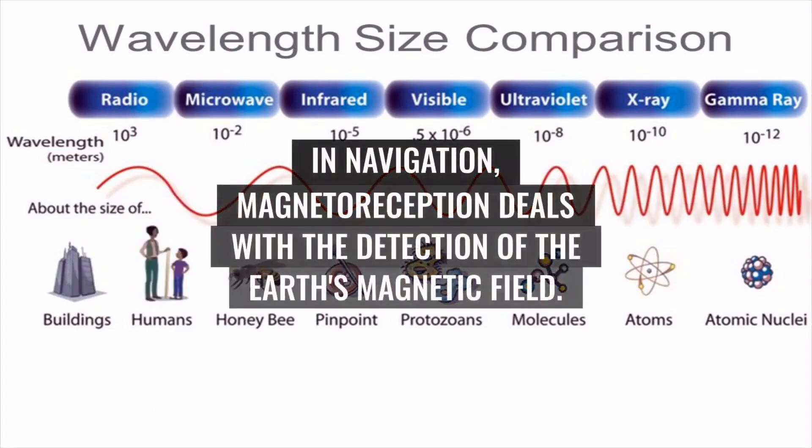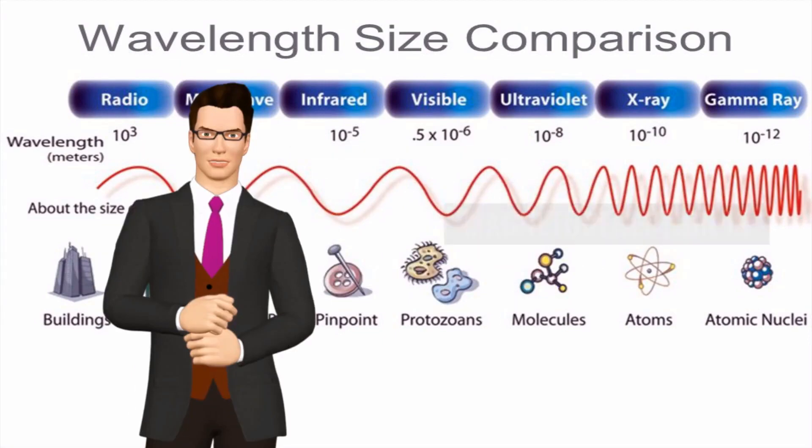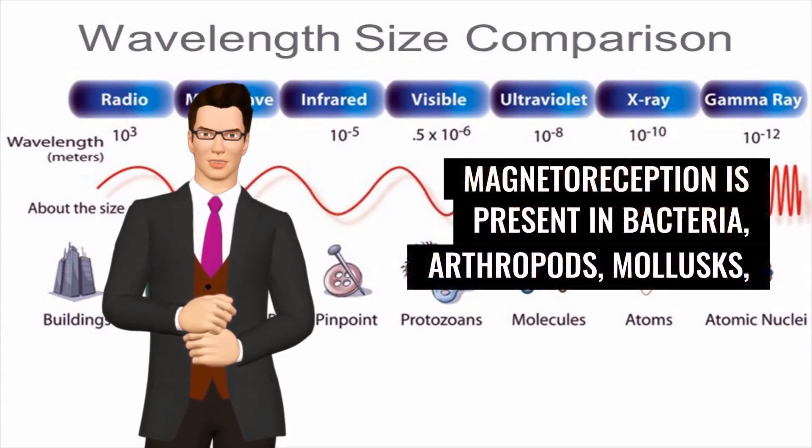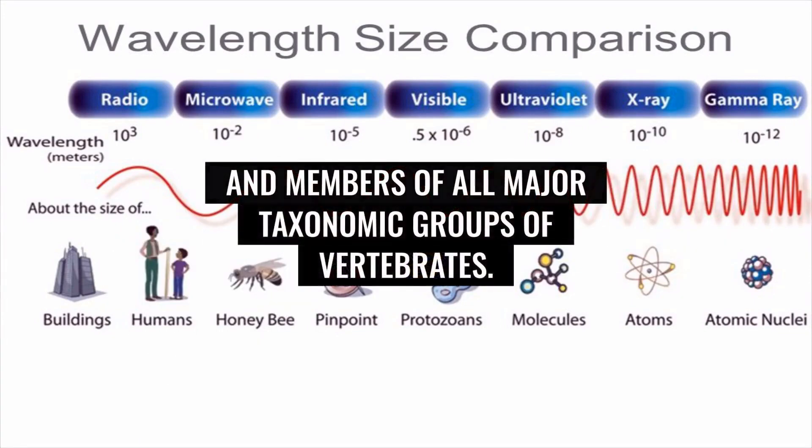In navigation, magnetoreception deals with the detection of the Earth's magnetic field. Magnetoreception is present in bacteria, arthropods, mollusks, and members of all major taxonomic groups of vertebrates.